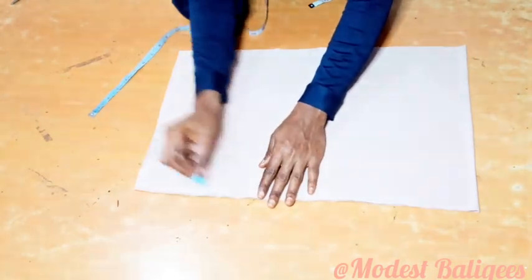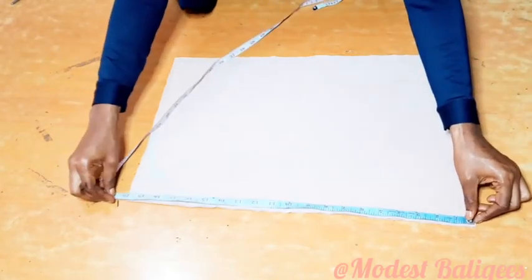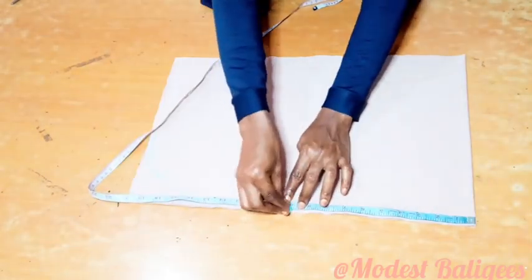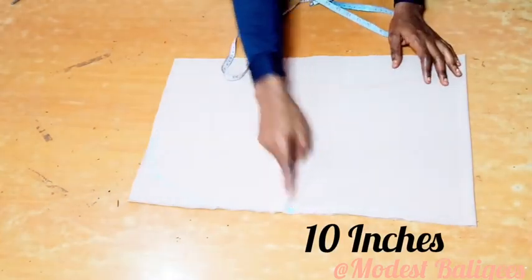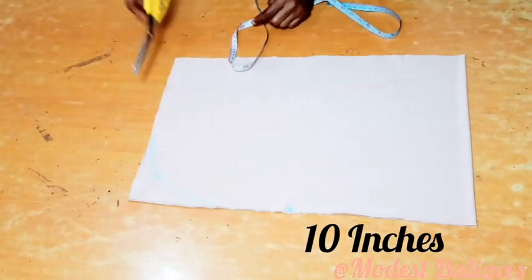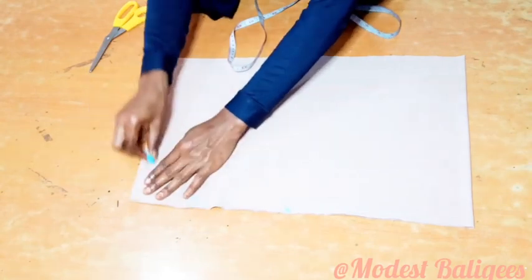After making the curve, I'll come to the upper hand and take the midpoint there. The midpoint is around 10 inches. After taking the midpoint, I'm just going to cut it out. I'm going to cut out the curve I made.